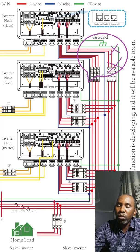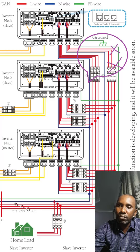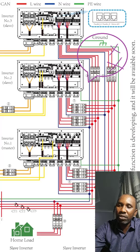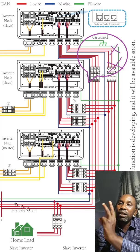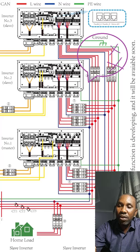Number one, you need to confirm an open circuit test. Number two, you need to carry out a short circuit test. And number three, you need to carry out a polarity test. So there are three basic tests you need to carry out on an electrical network in order to identify areas that are causing faults.